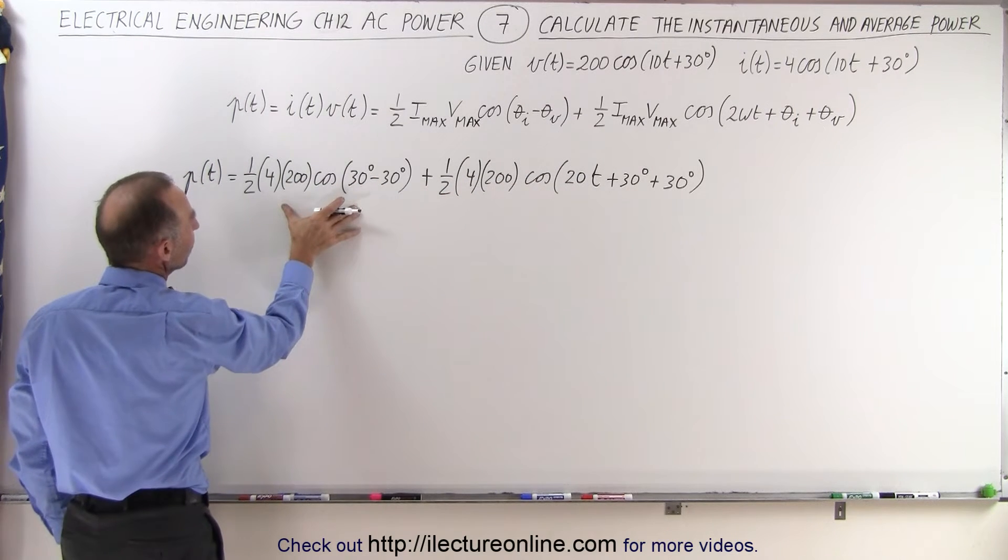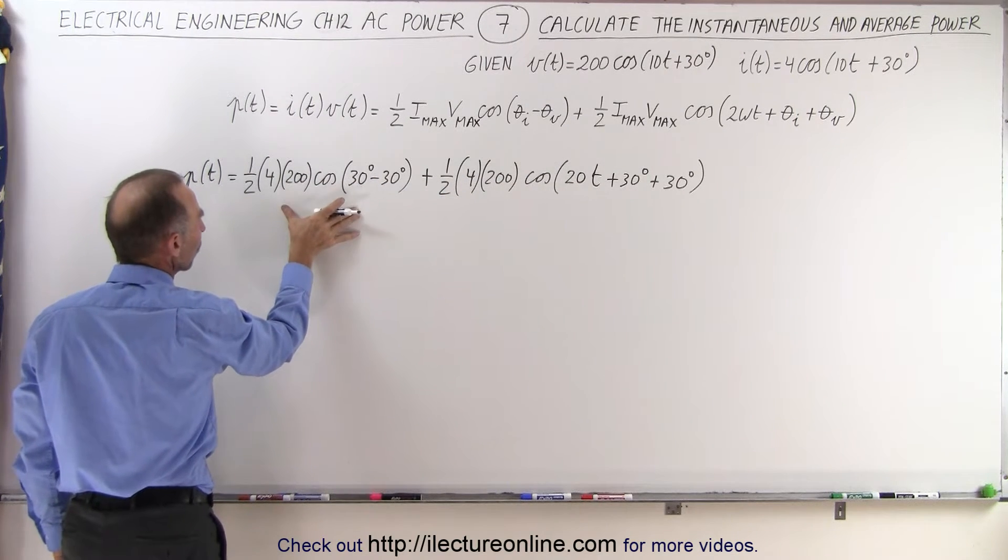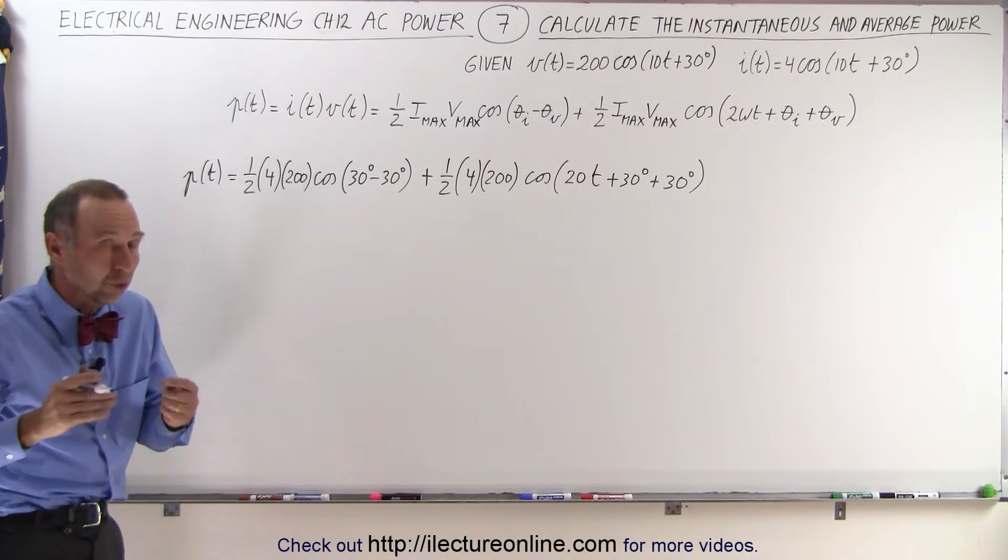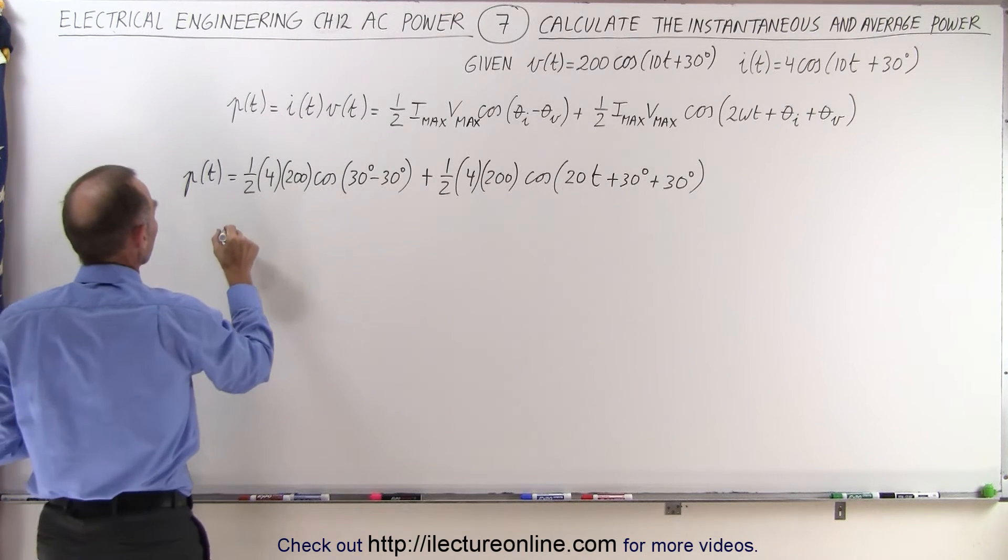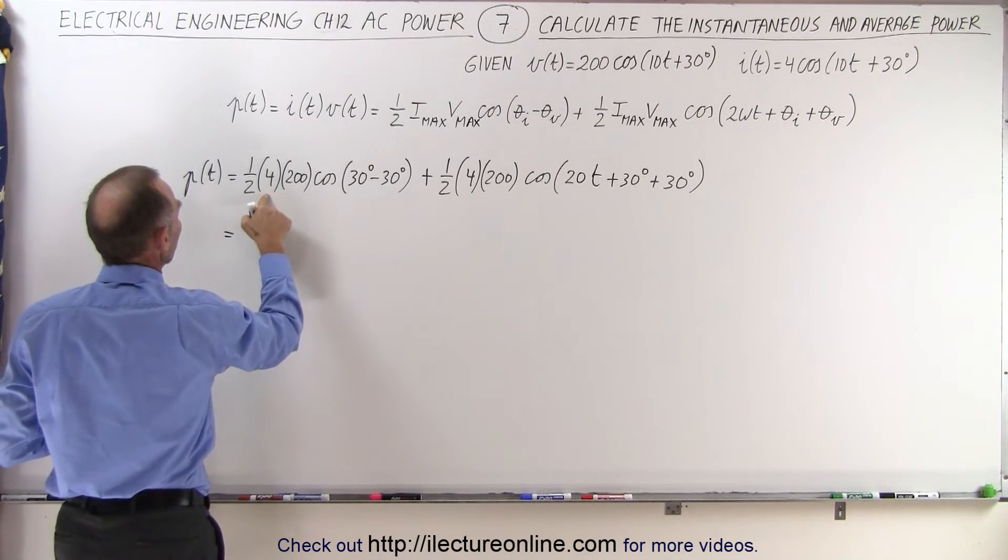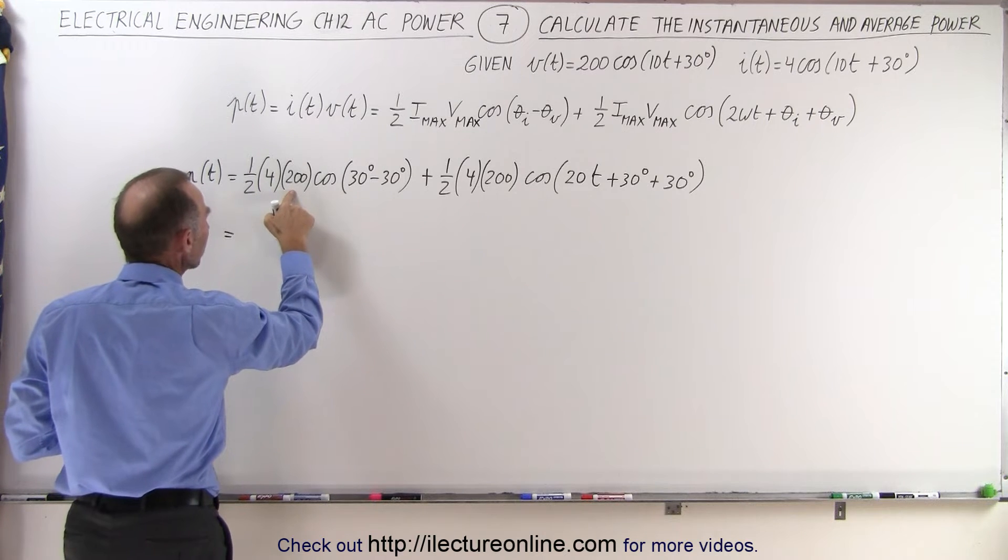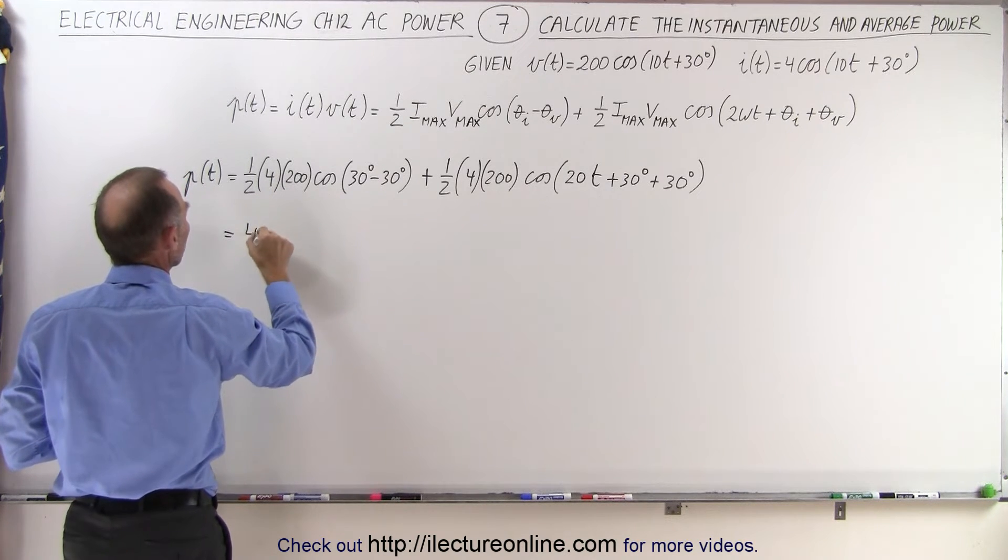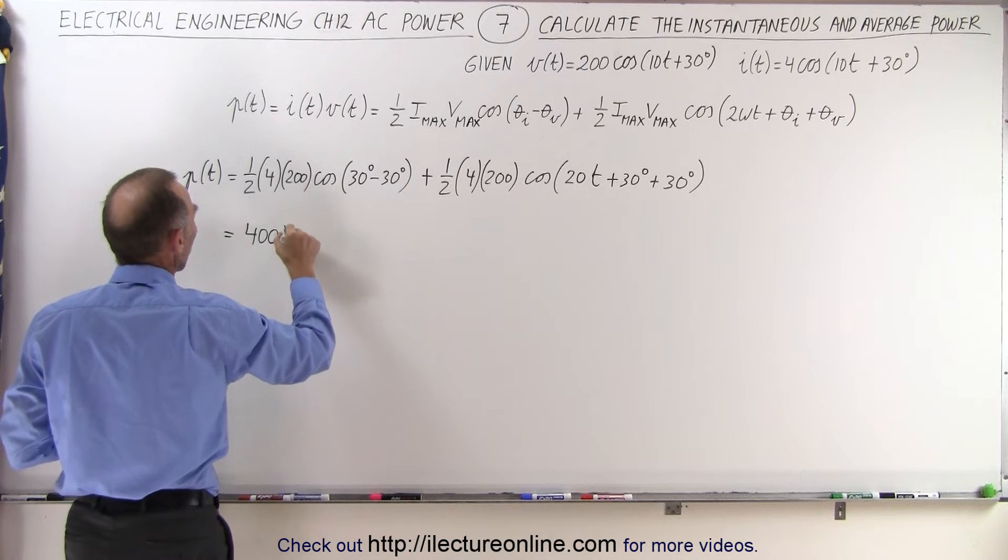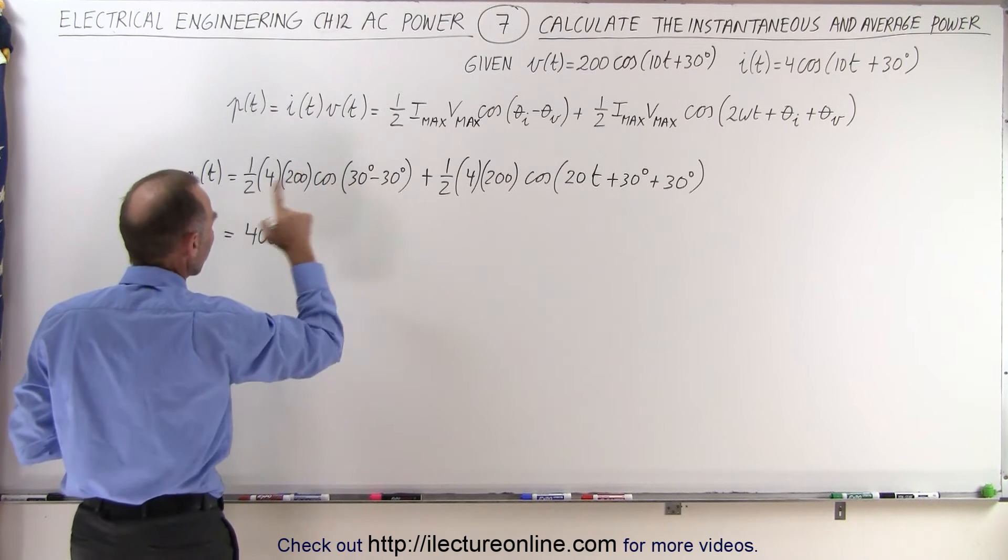So notice here that this now will represent the constant portion of the instantaneous power, which is also the average power. So this is equal to one half times 4, which is 2, times 200, which is 400, and the units will be watts because the cosine of zero is 1.